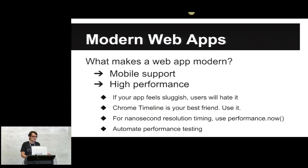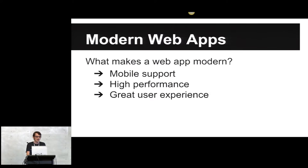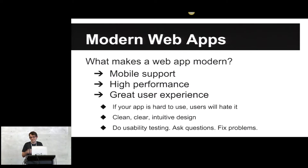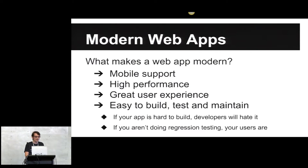Something that some people have missed: performance.now — super important. Nanosecond resolution, so you can actually measure how many fractions of a millisecond something took. Next, of course, is your user experience. If your user experience is hard to use, people aren't going to like it. When you're designing your GWT web application, users don't care what framework you use, how cool your linker is, or how many code generators you have. All they care about is: they click on the button, they get what they asked for.